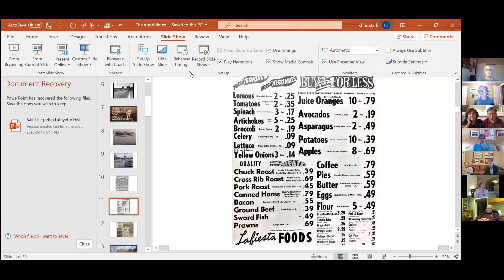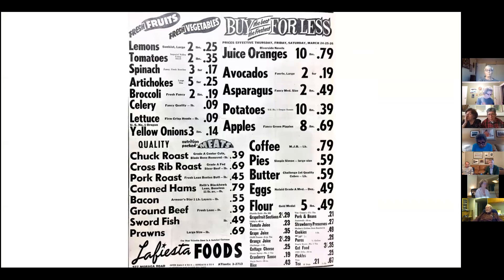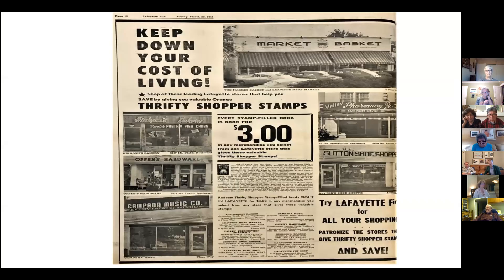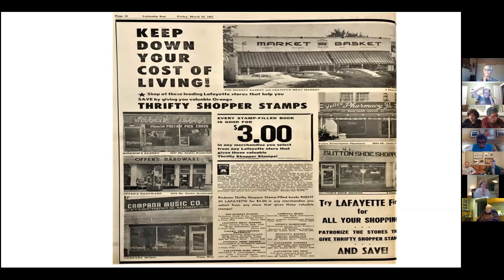Pardon the interruption — we're back. I think the internet's going down all over Lafayette. So where are we now? Keep down your cost of living. You know what — it was just a sign of the times. You're dealing with a generation fresh off World War II. It was the origination of loyalty groups — green stamps and blue chip stamps. I must have licked at least 5,000 books of blue chip stamps as a kid.